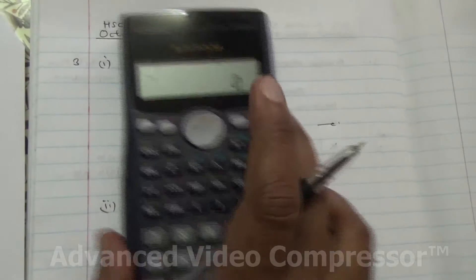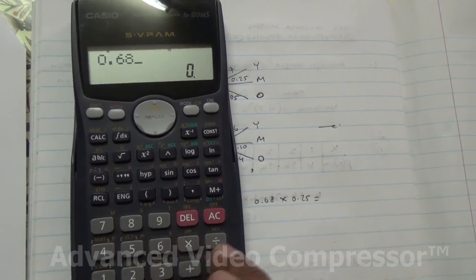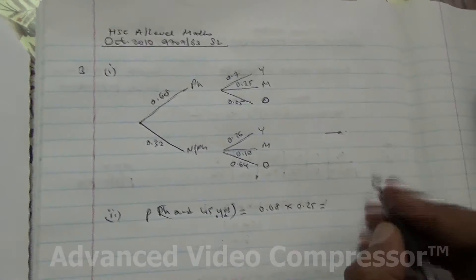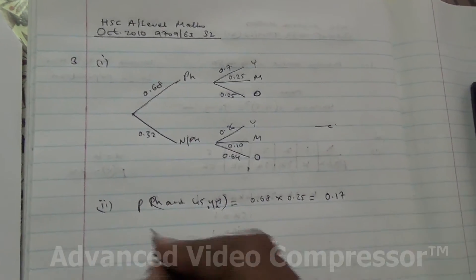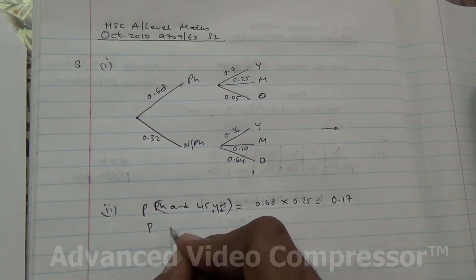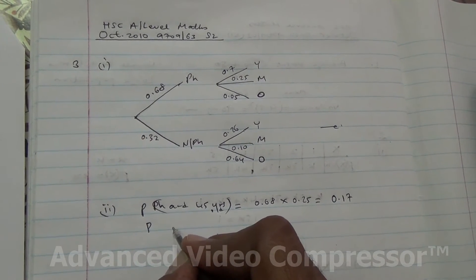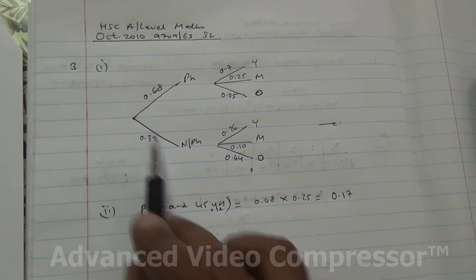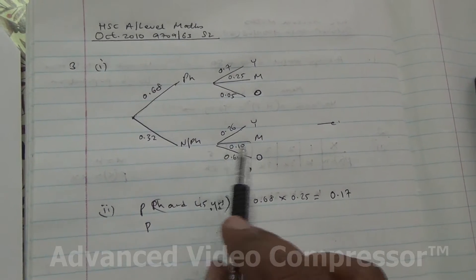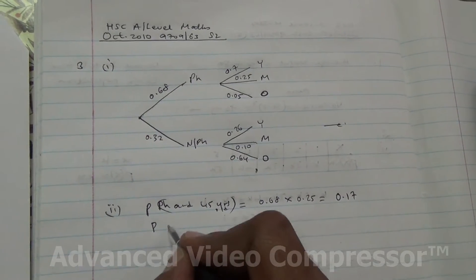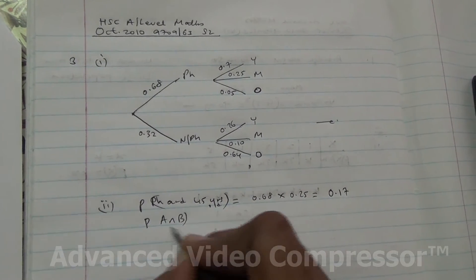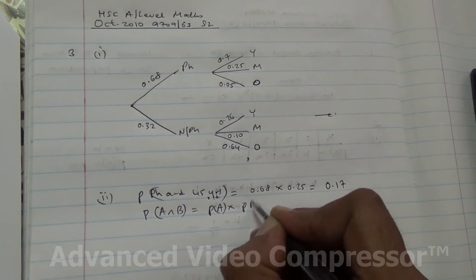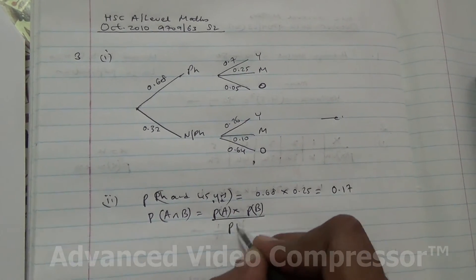That's going to give us 0.68 times 0.25, which is 0.17. Now this is the conditional probability. What is the probability that he's using a cell phone on a journey? If he's using a cell phone and he's 45, it could also be that he's not using a cell phone but he's also 45. So this is probability of A intersection B. Conditional probability equals probability of A times probability of B, divided by the probability of B.